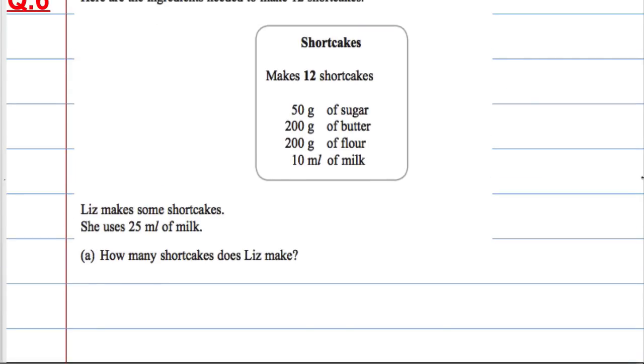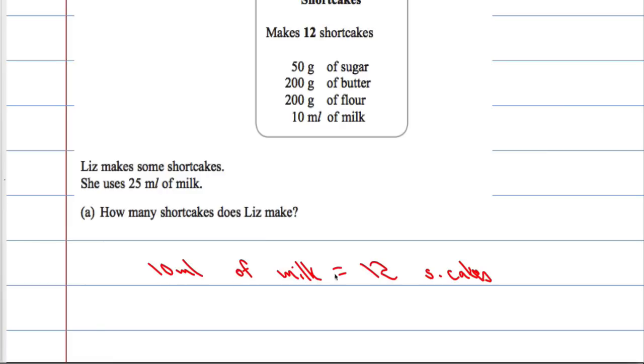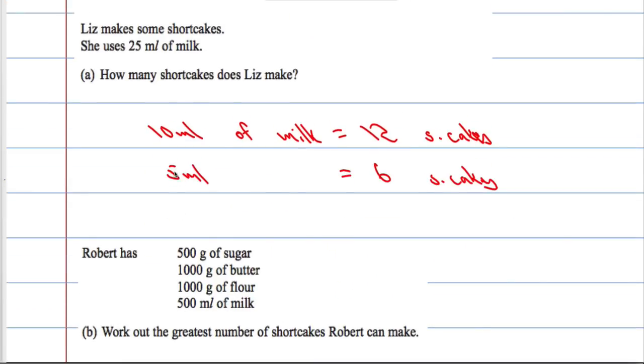If we look at the information we know, we know that 10ml of milk equals 12 shortcakes. Well if 10ml of milk makes 12, that means 5ml is going to be 6 shortcakes. And if 5ml is 6 shortcakes, that means 25ml times both sides by 5 is going to make 30 shortcakes.